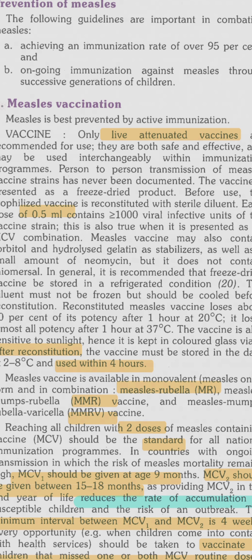The vaccine is heat and light sensitive, losing all its potency after one hour at 37 degrees Celsius. It is sensitive to sunlight and hence kept in colored glass vials. After reconstitution, the vaccine must be stored in the dark at two to eight degrees Celsius. The vaccine is a freeze-dried product requiring a sterile diluent, and must be used within four hours of reconstitution.